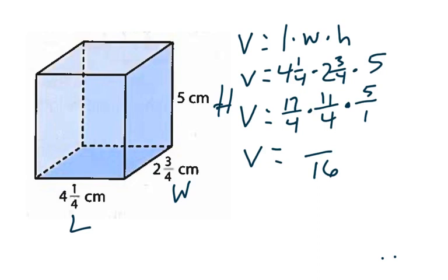Now, you are allowed to use a calculator, and we encourage you to use a calculator and do your work carefully. So, 17 times 11 is 187. 187 times 5 is 935. So, we end up with 935 over 16.